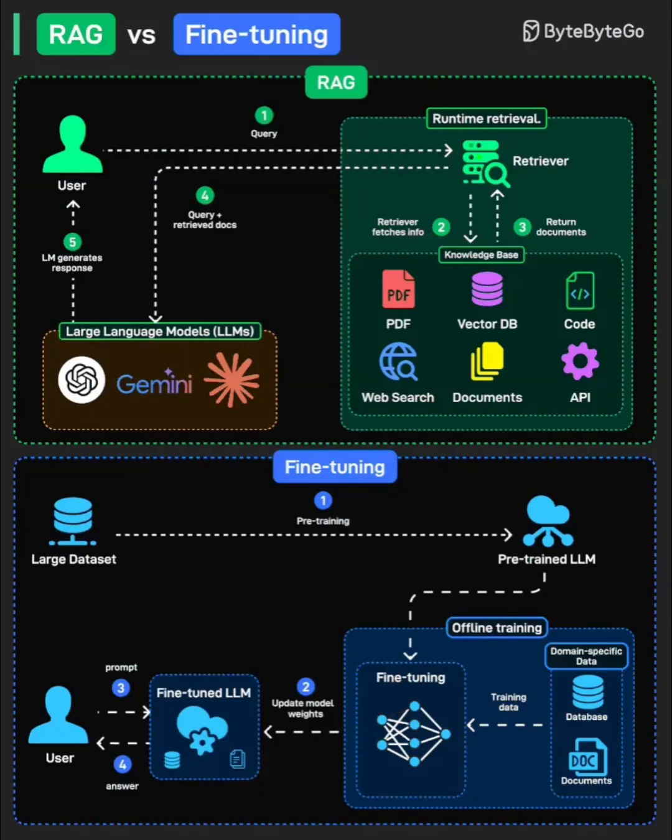RAG works with pre-trained models like GPT-4 or Gemini without any additional training. You're essentially augmenting the model's knowledge at query time rather than baking information into the model itself.